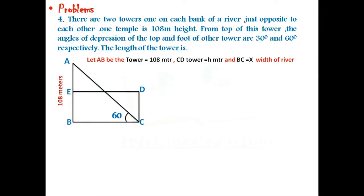From triangle ABC, tan 60° equals AB by BC, which is 108 by X. As we know, tan 60° equals root 3, then X equals 36 root 3.